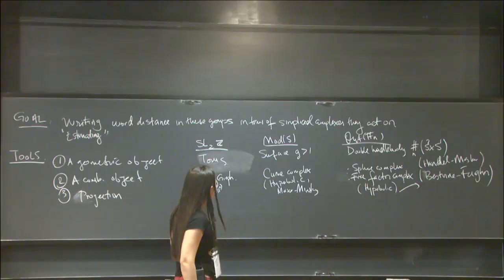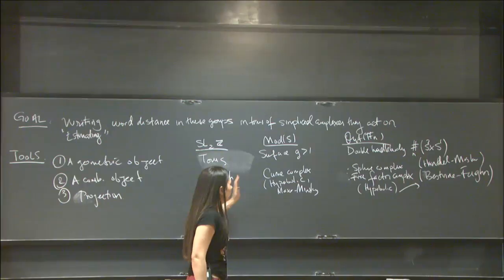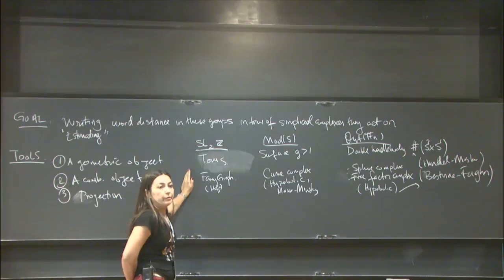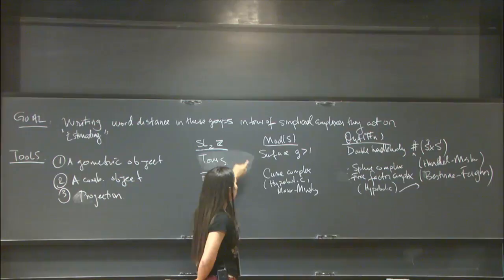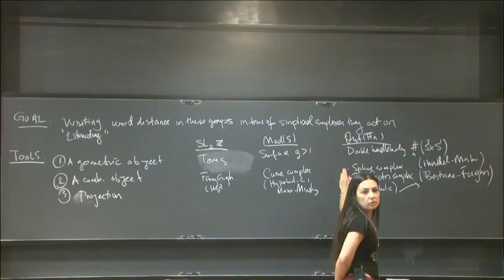The distance formula I'm going to talk about is actually the Masur-Minsky distance formula — it's famous that way. The intuition is that they generalized it to write the word distance between two mapping classes using the geometry of the curve complex. We're trying to do that for Out(F_n) currently, but we have only partial results so far. It's an ongoing project.